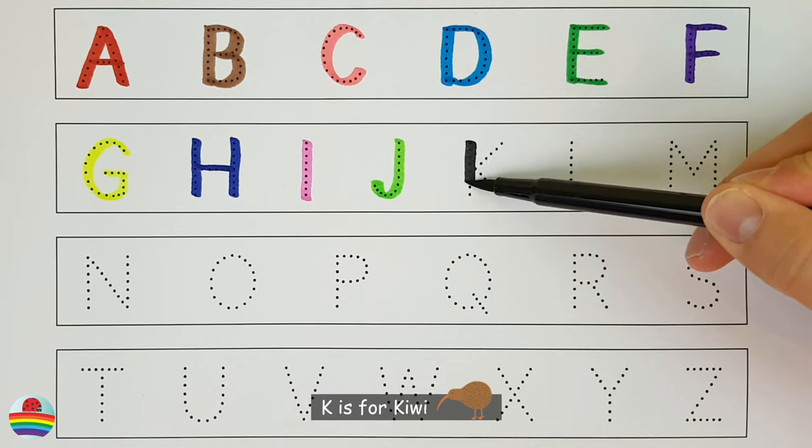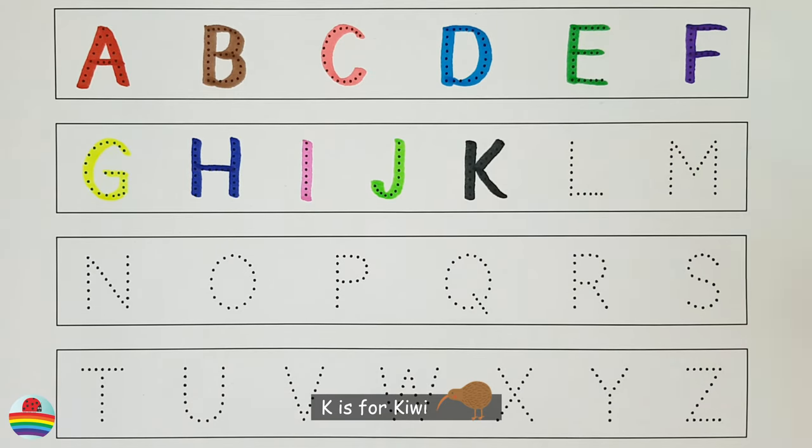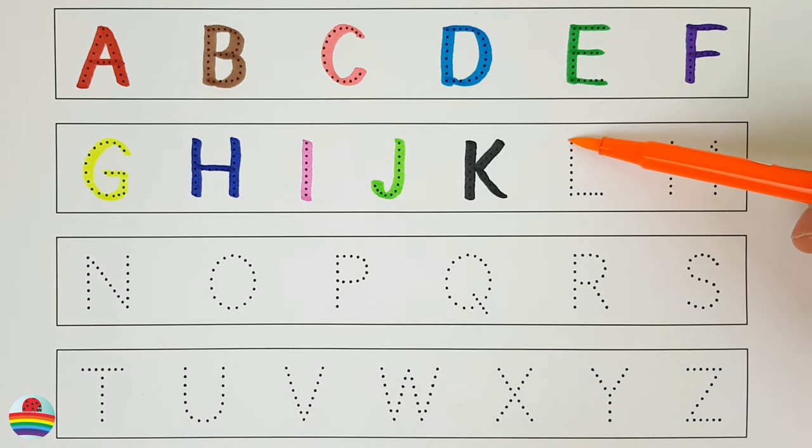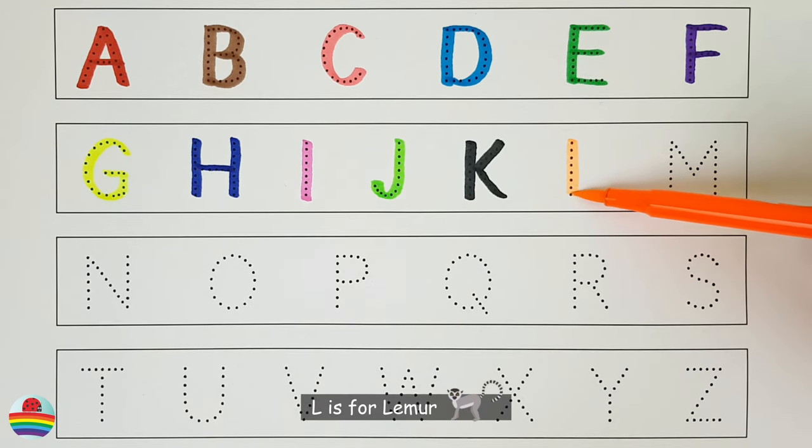K. K is for kiwi. K. L. L is for lemur. L.